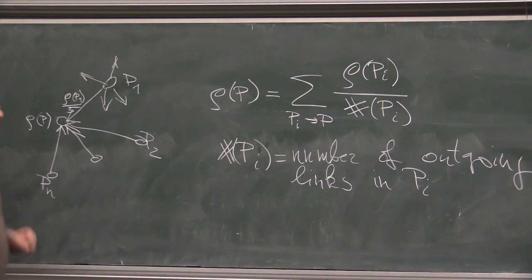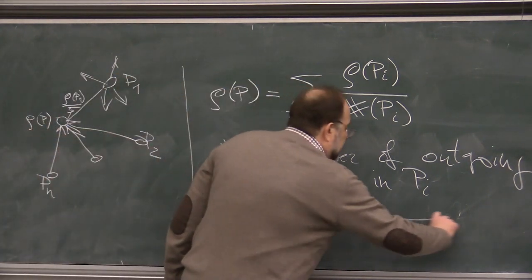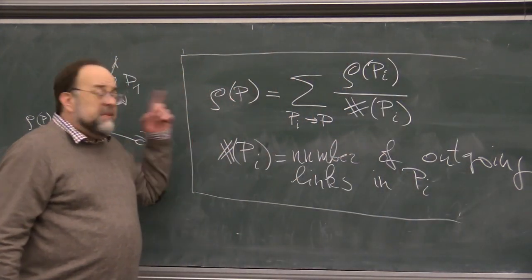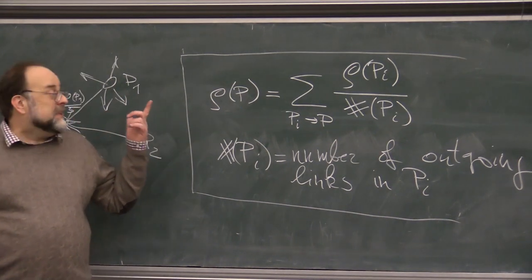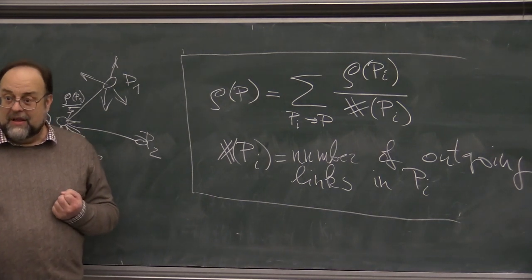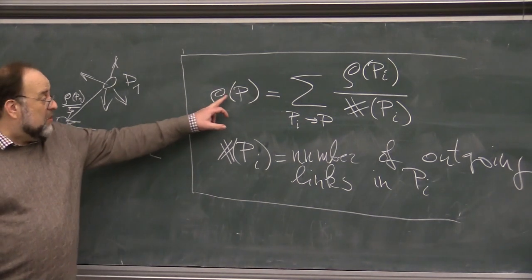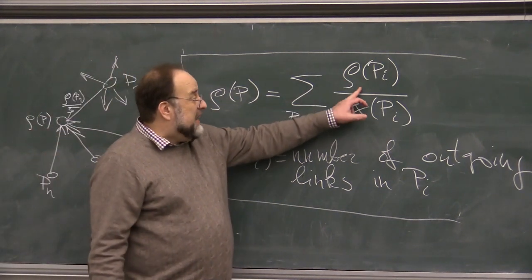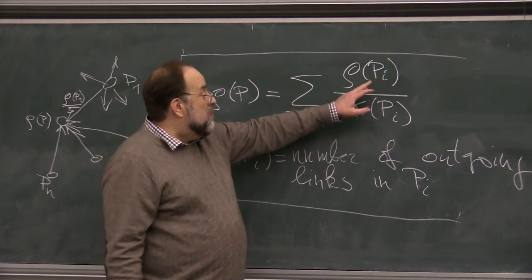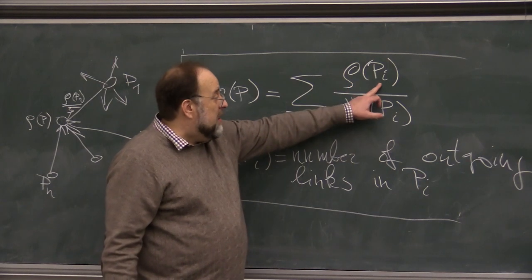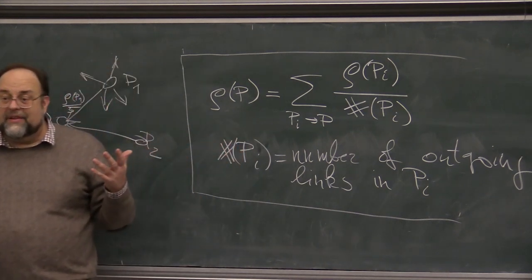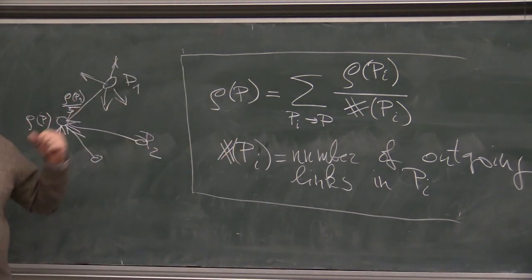So for example, if this web page points all together at five other web pages, then what it will be conferred to P will be a rank of P1 divided by 5, and so forth, right? So you get only a fraction, equal fraction of the rank of the web page, right? Depending on how many outgoing links it has, because you can then say that the trustworthiness of P1 is distributed equally to all web pages that contain, that have out the P1 points, right? Are you with me so far?